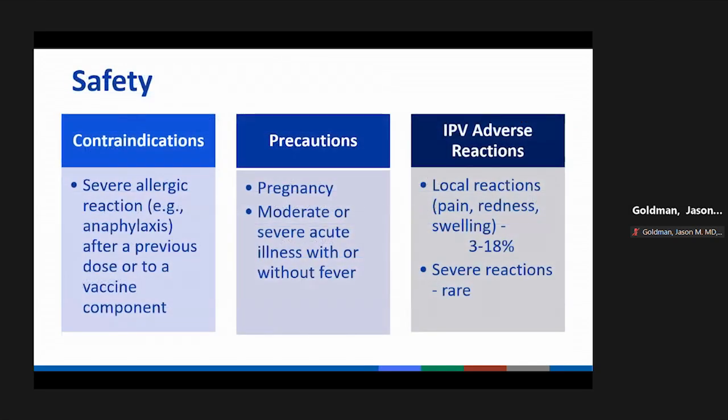The safety of IPV is well-proven. The only contraindications are severe allergic reactions after a previous dose or a vaccine component. Precautions include pregnancy or moderate-to-severe acute illness on the day of vaccination. Local reactions including pain, redness, and swelling appear in about three to eighteen percent of people, and severe reactions are rare.